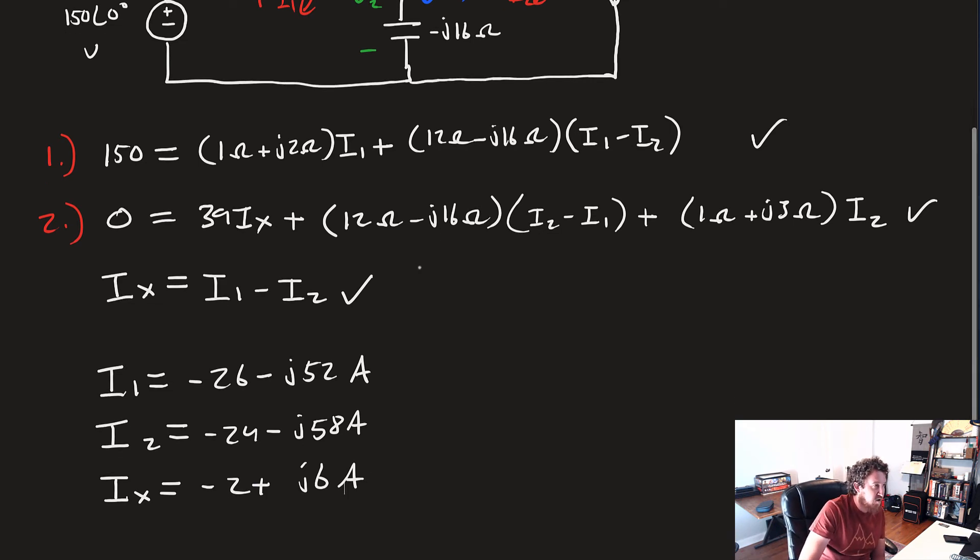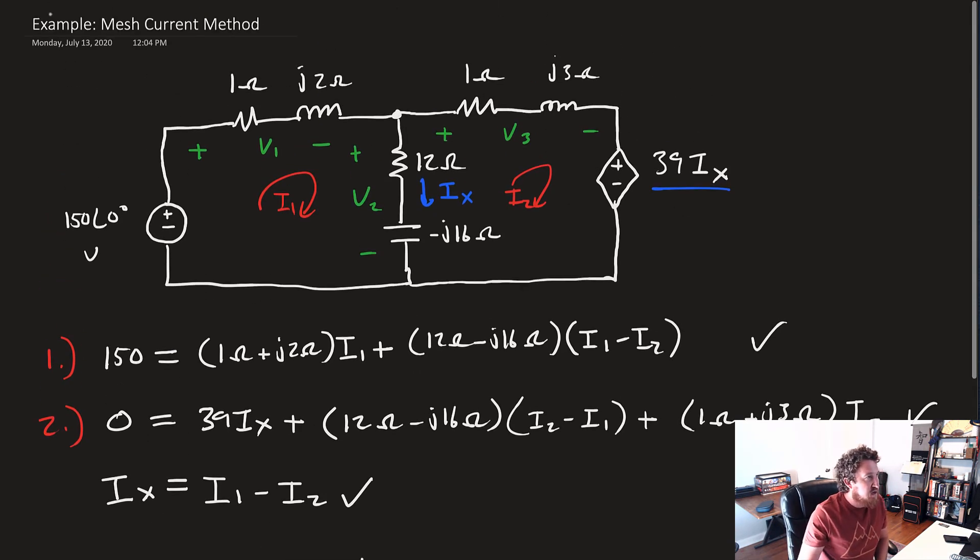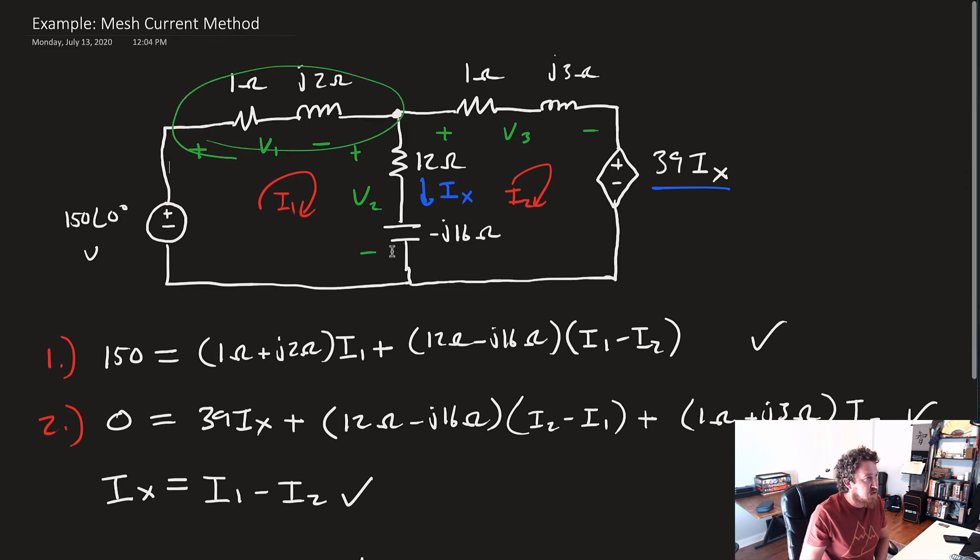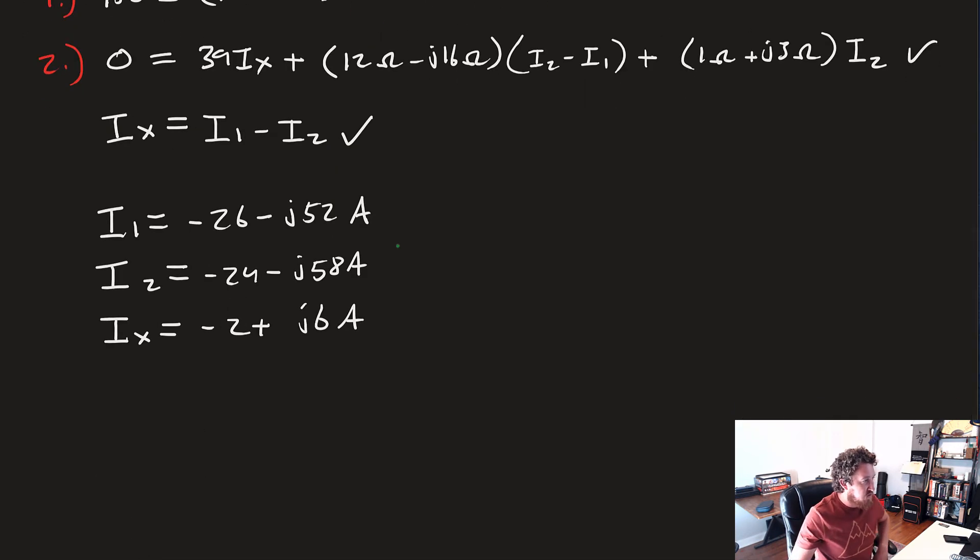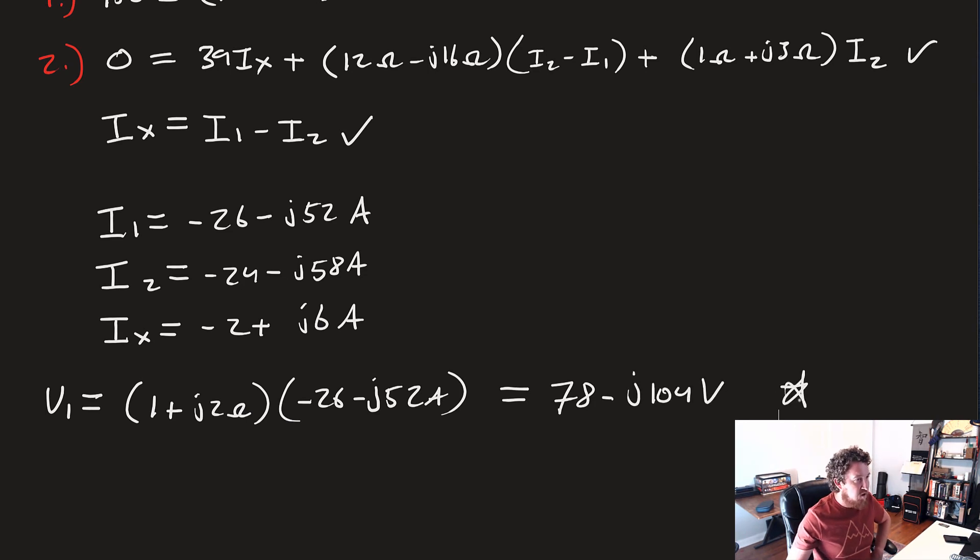Now we're ready to go back and find our voltages, so if we scroll up, V1 is just I1 times that impedance right there. So, we'll say that V1 is equal to 1 plus j2 ohms times I1, which was minus 26 minus j52 amps. Now that gives us a V1 equal to 78 minus j104 volts, and that's our first solution.